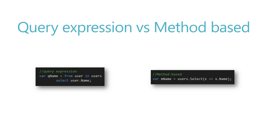In a standard SQL query, SELECT comes first then FROM, but in LINQ it's the other way around. Behind the scenes, 'from user in users' is essentially doing an iteration like a for-each, and 'select user.Name' is where you pick the item from that for-each loop. For the method-based expression, you write users.Select(x => x.Name) using a lambda expression — performing exactly the same operation but in method syntax. That's the difference between query expression and method-based expression.